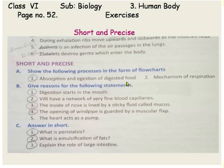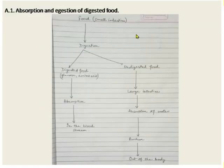How can we show absorption and ejection of digested food in the form of a flowchart? Let us see — we have done this before but we will revise. Food is digested in the small intestine, but after digestion, food can be categorized into digested food and undigested food.